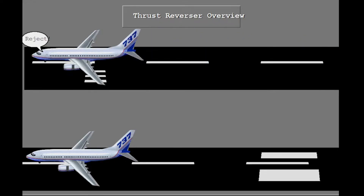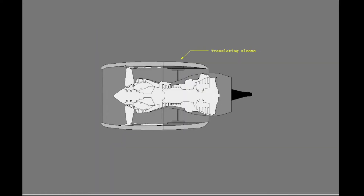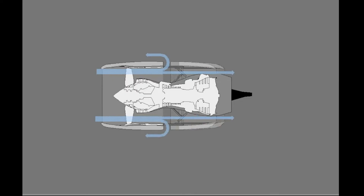Each engine is equipped with a thrust reverser system for normal landing and rejected takeoff operations. Each thrust reverser consists of a left and right translating sleeve. Aft movement of the translating sleeves causes blocker doors to deflect air forward through fixed cascade guide vanes, which causes reverse thrust.